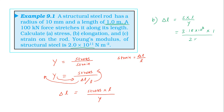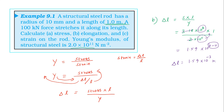So change in length = (3.18 × 10⁸ × 1) divided by (2 × 10¹¹), which gives 1.59 × 10⁻³ m. That is the elongation.